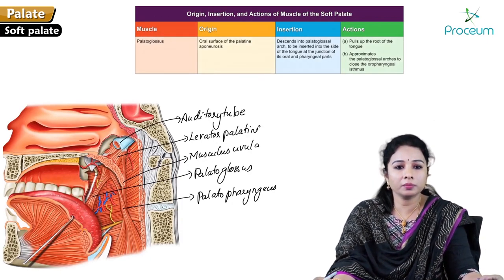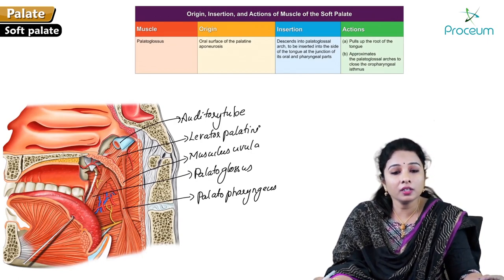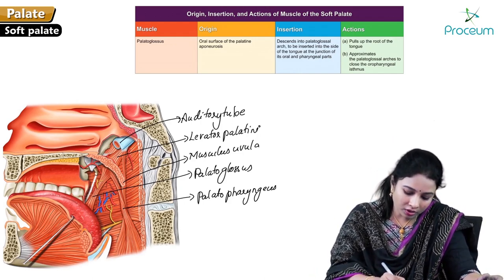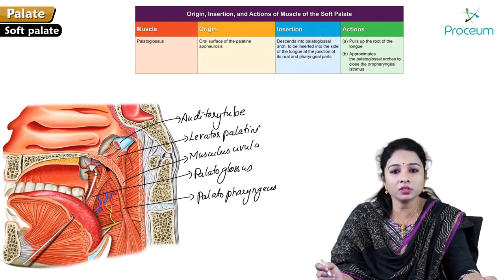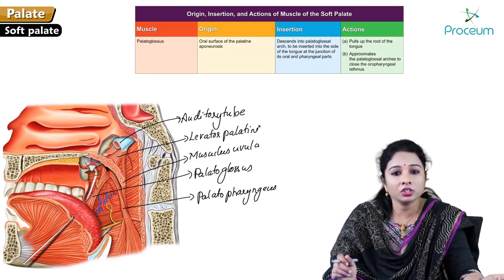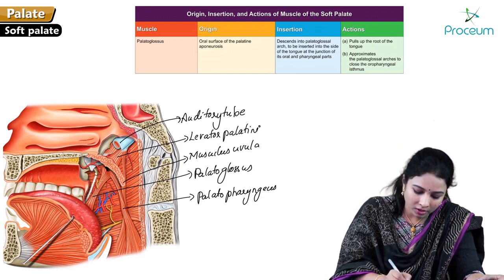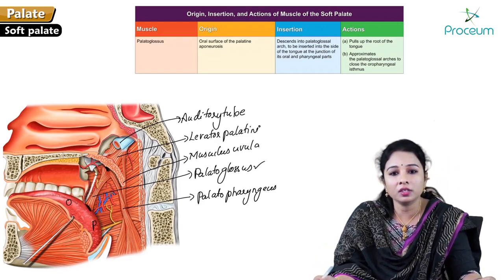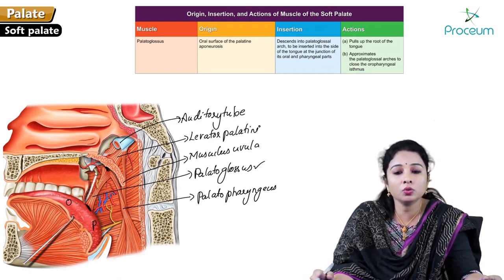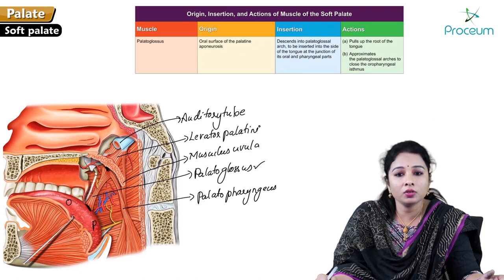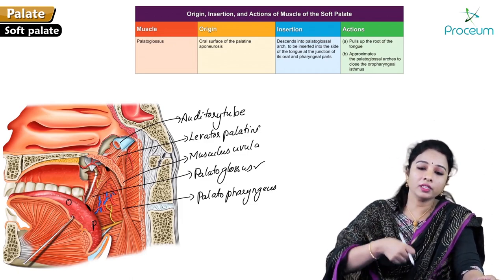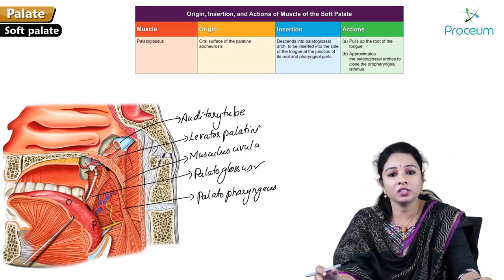The palatoglossus muscle originates from the oral surface of the palatine aponeurosis, descends in the palatoglossal arch, and inserts into the side of the tongue at the junction of its oral and pharyngeal parts. Its action is to pull the root of the tongue upward, approximate the palatoglossal arch, and close the oropharyngeal isthmus.